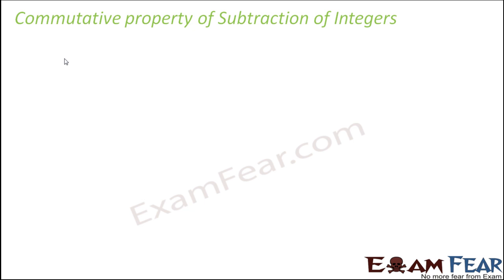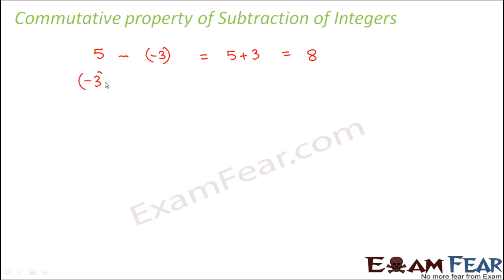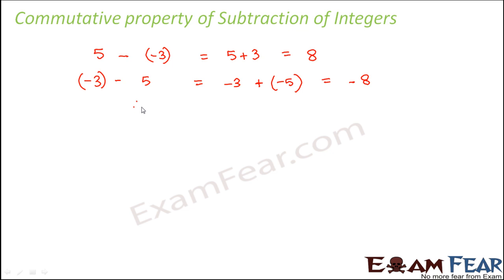Now let us look at commutative property for subtraction of integers. Take two integers 5 and minus 3. 5 minus minus 3 becomes 5 plus 3, which equals 8 — because subtracting a number means adding its additive inverse. Now change the position: minus 3 minus 5 becomes minus 3 plus minus 5, which equals minus 8. You see that the order of the integers has changed and the calculation has also changed, so 5 minus minus 3 is not equal to minus 3 minus 5.